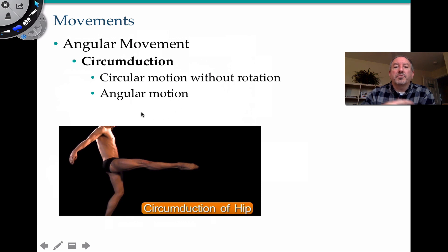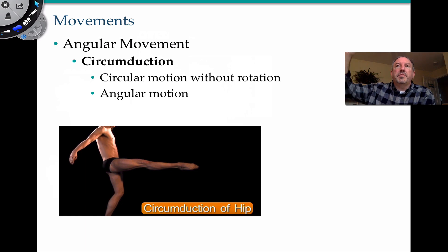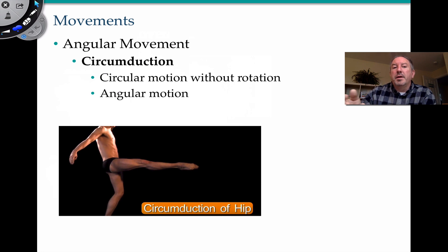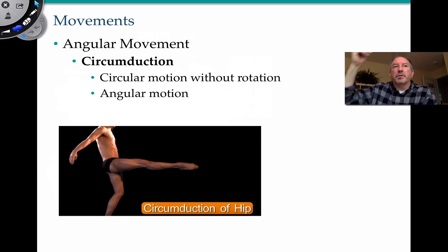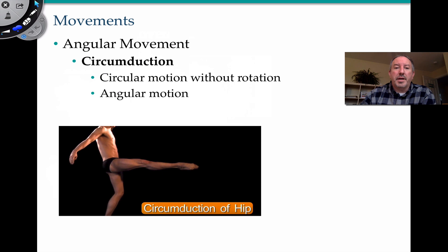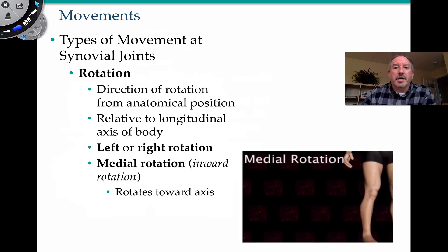Circumduction is a circular motion without rotation. An example would be circumduction of the hip, where you're swirling your hip around, or moving your shoulder joint around in a circle — as if you have a lasso and you're trying to rope an animal.